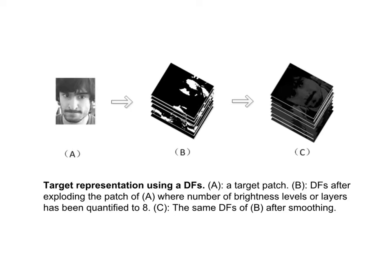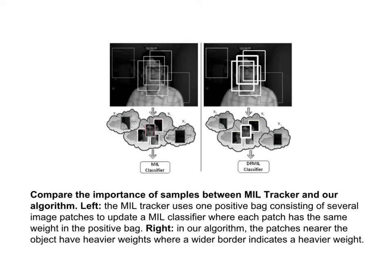In this paper, we introduced the distribution fields based target representation into the ML tracking method. The noise-over model in the original ML tracker assumes that a bag is a positive bag if one instance in this bag is positive, because all positive samples cropped are located around the tracking result. Not only one instance in a positive bag is positive — that leads to the conclusion that each instance should be positive, but its importance is different for the likelihood of a positive bag.